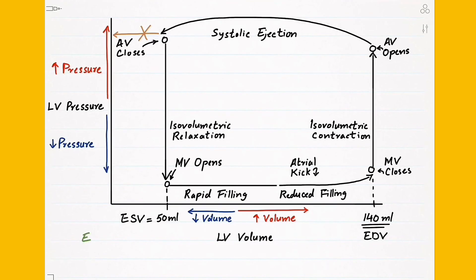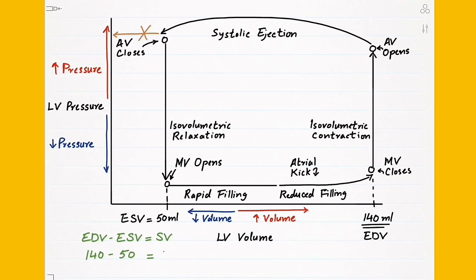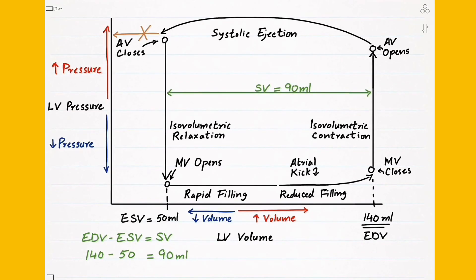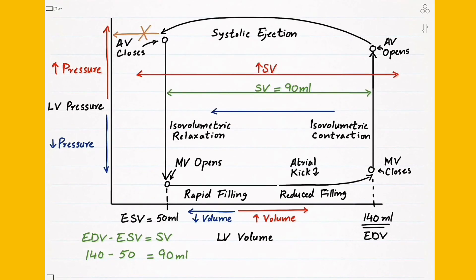End diastolic volume minus end systolic volume equals stroke volume, so we can determine stroke volume from these loops as well. In our example it's 140 minus 50, or 90 ml. The entire width of this graph represents the stroke volume, which should equal 90 ml. If we increase the length of this arrow, we increase the stroke volume; if we decrease the length, we are reducing the stroke volume.